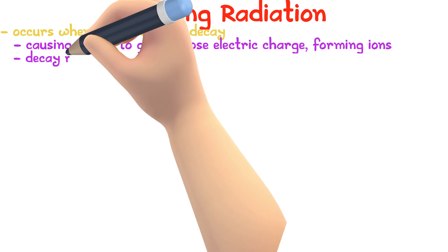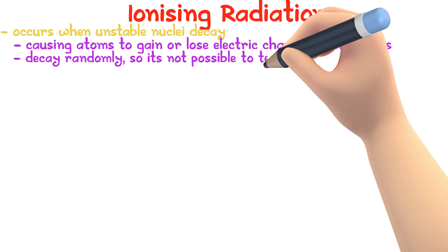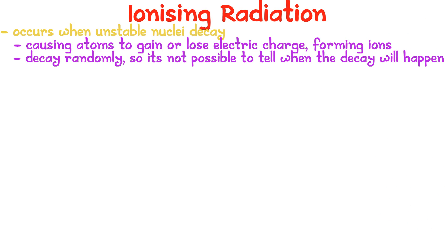Unstable atoms decay randomly, so it's not possible to tell when the decay would happen. There are four main types of ionizing radiation.